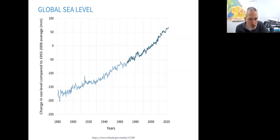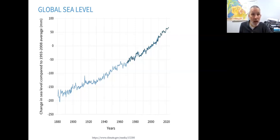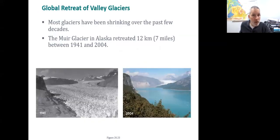Looking at more recent data, we are in fact seeing sea level rising. The 1993 to 2008 data shows changes in millimeters — so about 10 centimeters of change over roughly 40 years. 10 centimeters over 40 years isn't much until you remember the relief of places like Florida and many coastal shelves is really quite flat. We can see that glaciers have been retreating — the Muir Glacier in Alaska, quite a famous one, retreated about seven miles from 1941 to 2004.